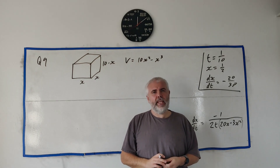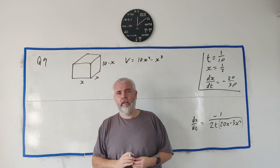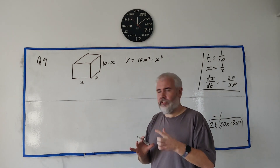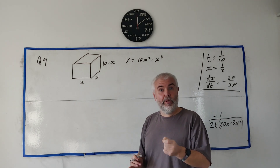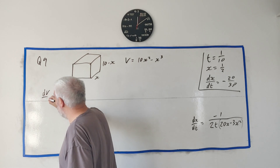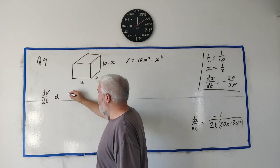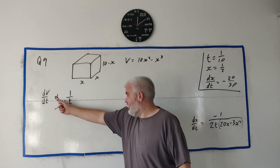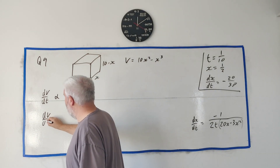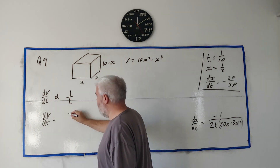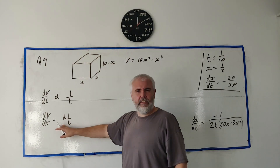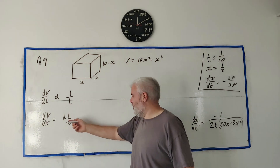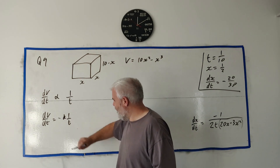Reading on into the question, it tells us x varies with time, and the volume of the container decreases at a rate inversely proportional to t. That's dV/dt, and inversely proportional to t means it's proportional to 1/t. We can turn the proportionality symbol into an equals: dV/dt equals a constant times 1/t. Since it decreases, I'll put a minus sign in.